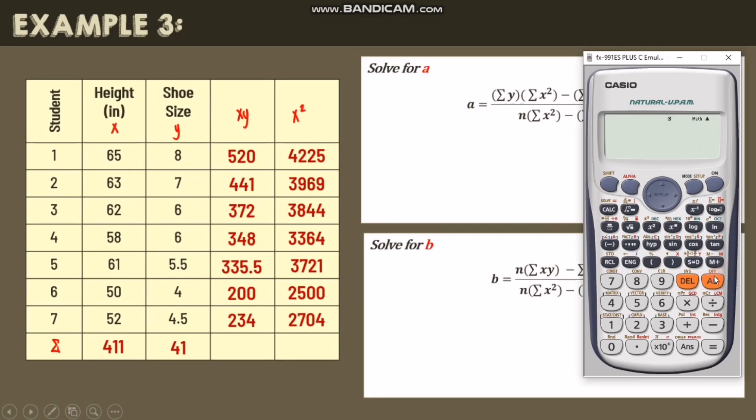Next, summation of xy. 520 plus 441 plus 372 plus 348 plus 335.5 plus 200 plus 234 equals 2,450.5.